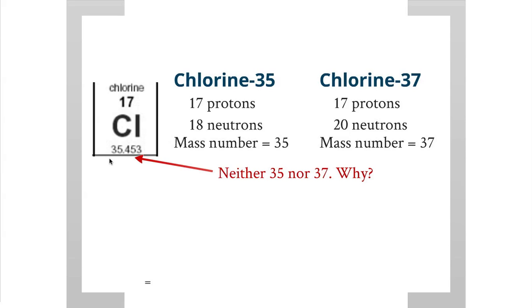Well, because you have chlorine-35: 75.78 percent of all the chlorine in existence exists as this isotope, chlorine-35. So 75 percent of chlorine has a mass number of 35. The other 24 percent has a mass number of 37.